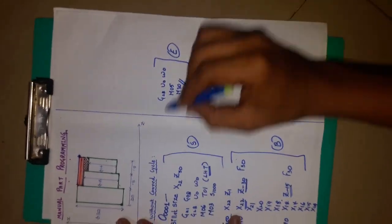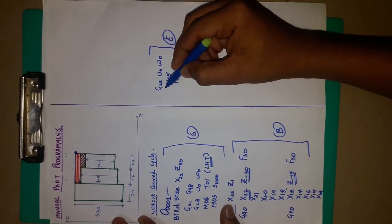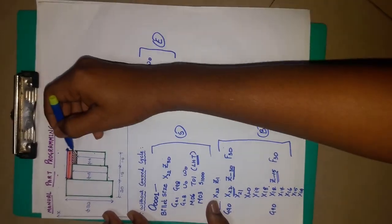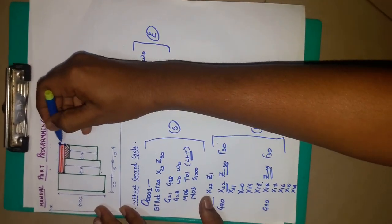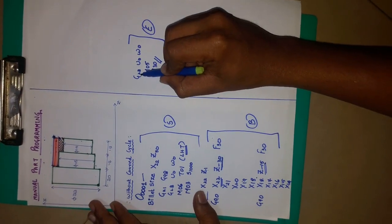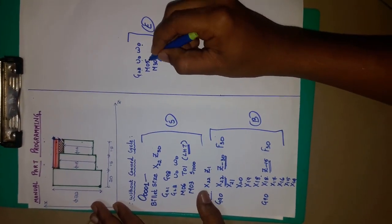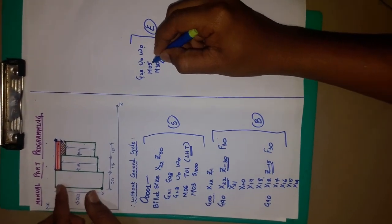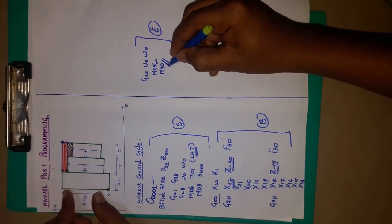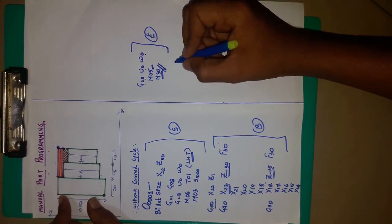The end of the program consists of bringing the tool back from the tool entry point position to the home position using G28 U0 W0. Then stopping the spindle using M05, and terminating the program — end of program — using M30. Thank you.